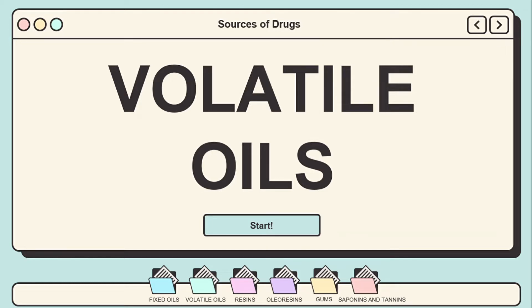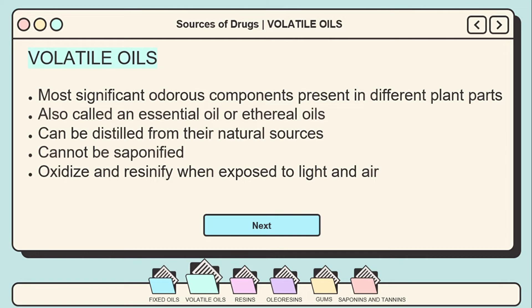The most significant odorous components present in different plant sections are volatile oils. They are termed volatile oils, ethereal oils, or essential oils since they evaporate when exposed to air at normal temperatures. The term essential oil is applied since volatile oils represent the essences or the active constituents of such plants.